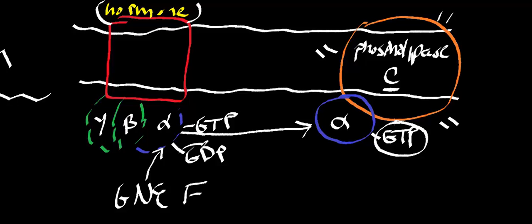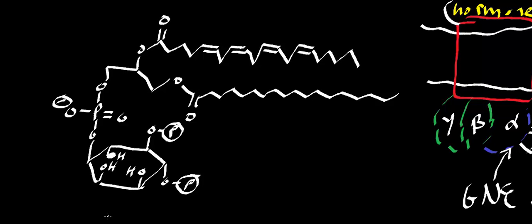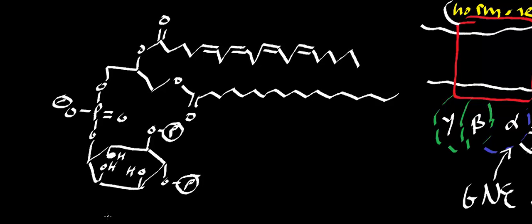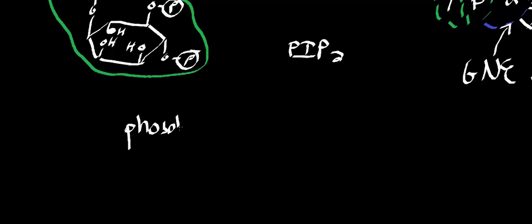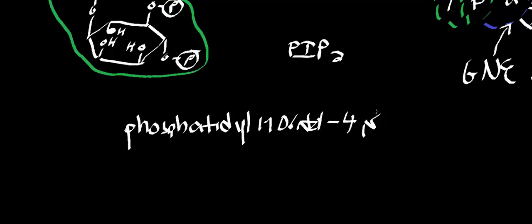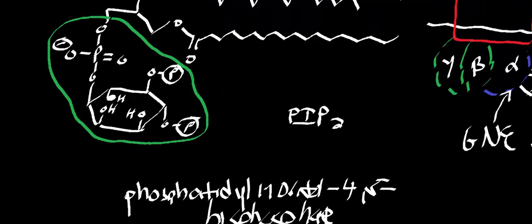Phospholipase C is a different enzyme, and its substrate is shown on the left. At first glance it may look complex, but if you break it down it's not too difficult. This molecule is called PIP2, which stands for phosphatidylinositol 4,5-bisphosphate. If you look at the inositol component circled in green, carbon 4 and carbon 5 are where the bisphosphate comes from.